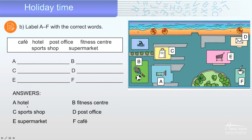Let's see. A is the hotel. The hotel. You can sleep. B is the fitness center. Fitness center. C is the sports shop. Sports shop. You can buy things. D, the post office. You can send mail. E, supermarket. And F, the cafe. The cafe. Got it? Good.